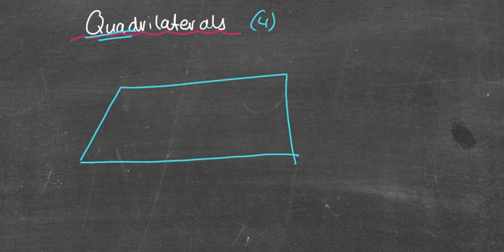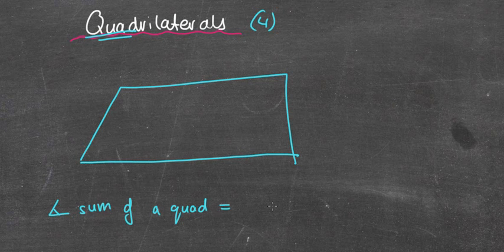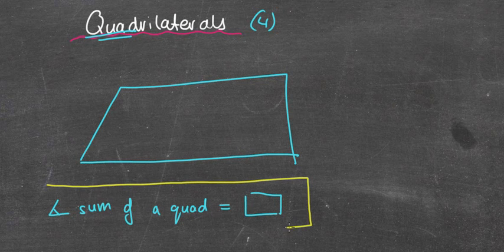But what we're going to look at, like we did with the triangles, we're going to look at the angle sum of a quadrilateral first of all — the angle sum. Because like the triangle, there is an exact number that if I add the four angles together of any quadrilateral in the world, it will always equal one particular value.